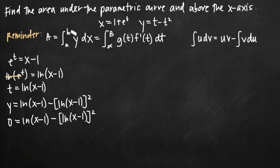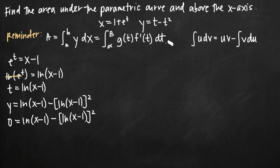What we're then going to do is plug those limits of integration back into our equation for t so that we can get limits of integration alpha and beta, because the integral in terms of t is really the one we want to use to find area under a parametric curve.